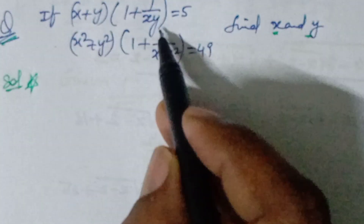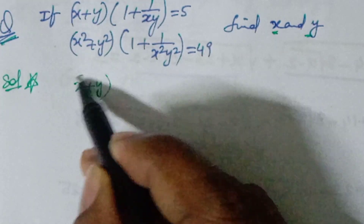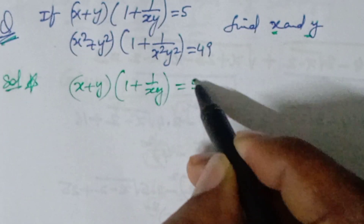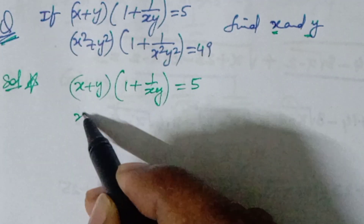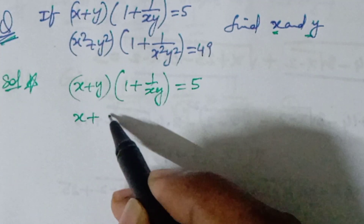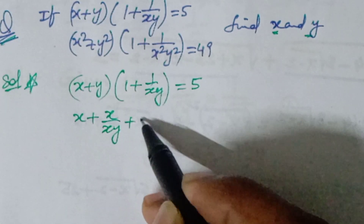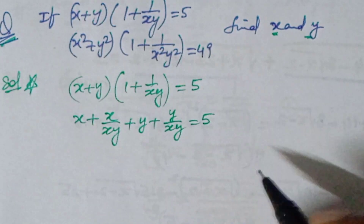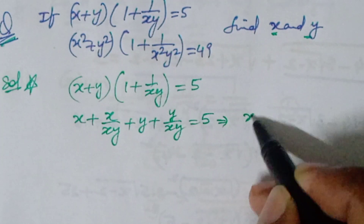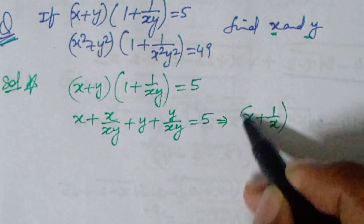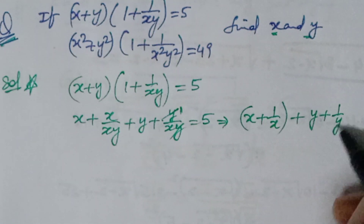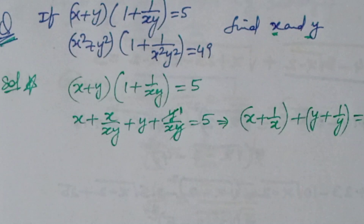If you multiply the first expression: (x + y)(1 + 1/xy) = 5. Expanding this gives x + x/xy + y + y/xy = 5, which simplifies to x + 1/y + y + 1/x = 5. So we get x + 1/x + y + 1/y = 5. That is the first step — very very critical and very very important.